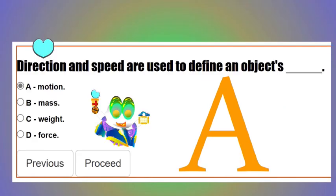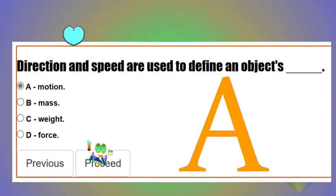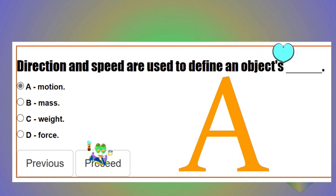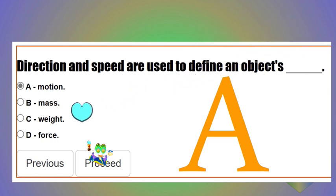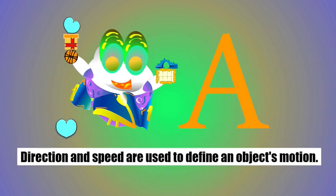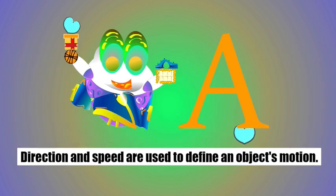This next question is to fill in the blank. Direction and speed are used to define an object's blank. The correct choice is A — direction and speed are used to define an object's motion.